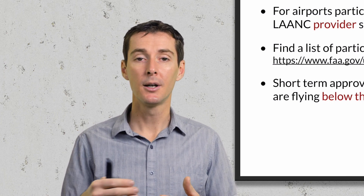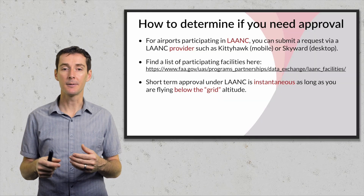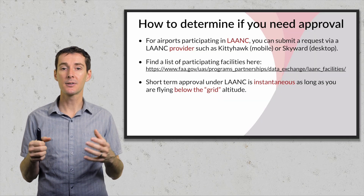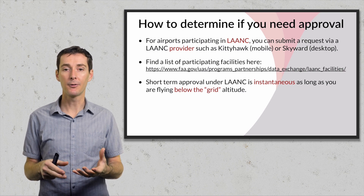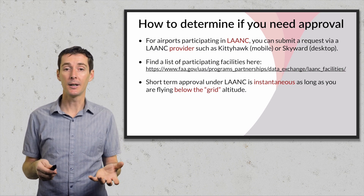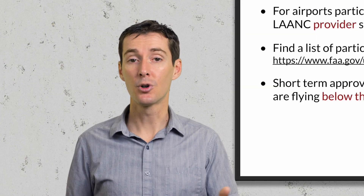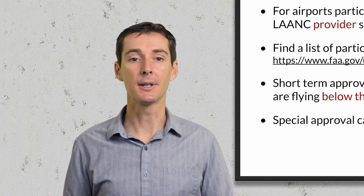As you get closer to the airport, those areas become more restricted. What the FAA did is give us blocks of airspace with different altitudes that we can fly at, and we can just request to fly in that airspace. It's very much like what a manned pilot does when they say 'I want to enter Class D airspace to go and land' — you get approval to do it. This is the same thing.